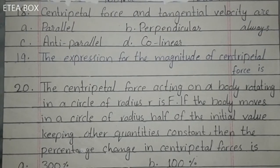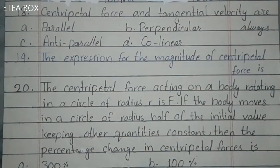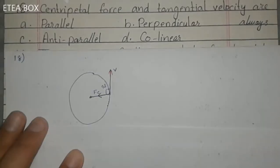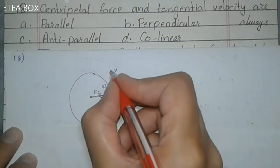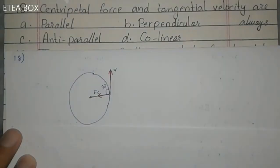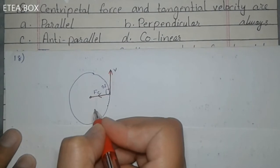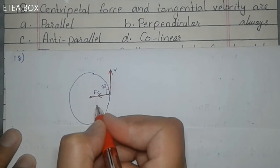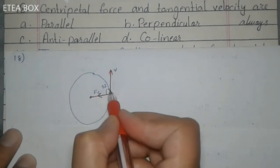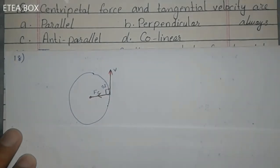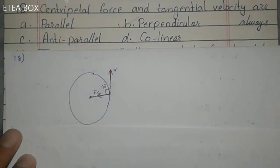MCQ 18: Centripetal force and tangential velocity. The tangential velocity is directed along the circle, but centripetal force is always directed toward the center. The angle between them is 90°, which means they are perpendicular to each other. Option B is correct.